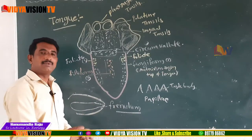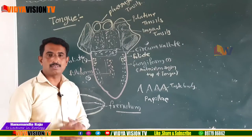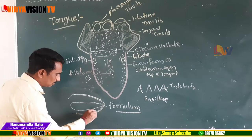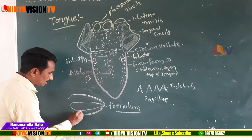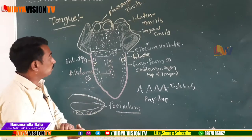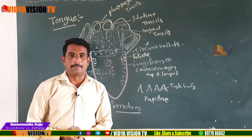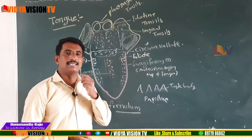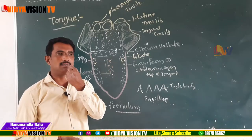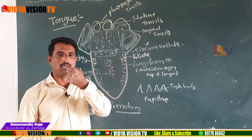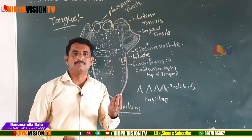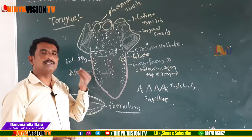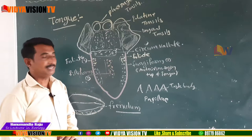The buccal cavity consists of mainly two parts: teeth, which we already discussed, and the tongue. The tongue is freely movable, muscular, and a sense organ, present inside the buccal cavity. Muscular means the tongue is composed of muscles.